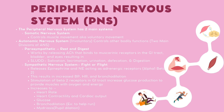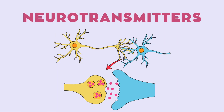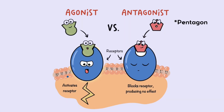The sympathetic nervous system is the fight-or-flight response. It releases epinephrine and norepinephrine, which act on adrenergic receptors. This results in an increase in blood pressure, heart rate, and bronchodilation. Stimulation of beta-2 receptors in the GI tract increases glucose production to provide muscles with oxygen and energy, and also increases heart contractility, cardiac output, bronchodilation, and mydriasis.